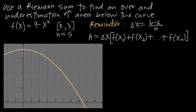Remember that a and b come from the interval we've been given, so the interval a to b. So delta x equals b minus a divided by n gives us 3 minus 0 divided by 5, which is 3 fifths. So now we know the width of each subinterval.